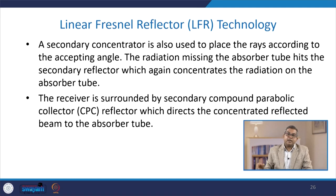These mirrors can be flat or slightly curved, reflecting the light rays towards the linear collector containing stainless steel absorber tubes. The collector can be a fixed absorber tube placed at a common focal line of the reflecting mirrors. The reflectors can have a single or dual-axis tracker, allowing maximum collection of solar radiation in a day. A secondary concentrator is also used to place the rays according to the acceptance angle. The radiation missing the absorber tube hits the secondary reflector, which again concentrates it on the absorber tube. Usually the receiver is surrounded by a secondary compound parabolic collector, CPC, sometimes referred to as a CPC reflector, which directs the concentrated reflected beam to the absorber tube.